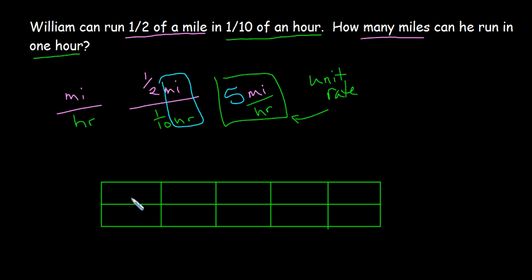Inside each one of these tenths of an hour, he can run a half mile. Every single one of these gets a half mile because he runs the same distance in every single one of these.